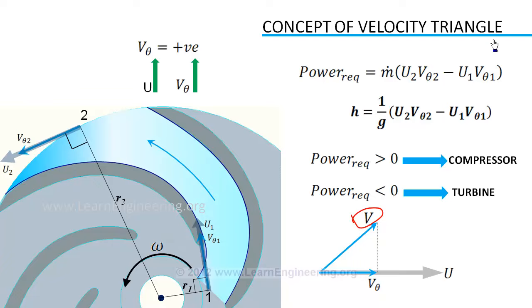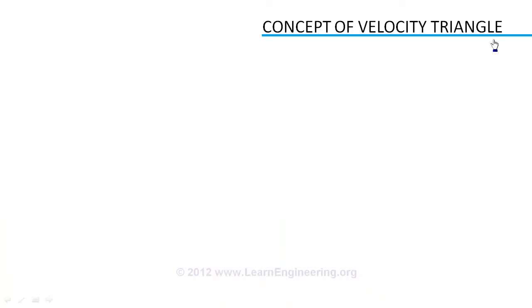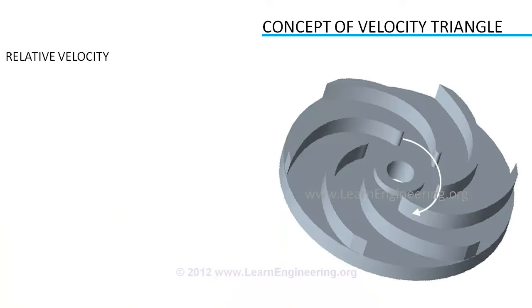The key idea in turbomachinery is the concept of relative velocity. Suppose you are standing on this rotating turbomachine. The velocity of fluid you experience while moving with it is called relative velocity. If fluid is having an absolute velocity V, and the blade is moving with a velocity U, then relative velocity experienced will be V minus U.